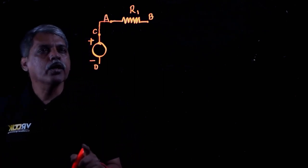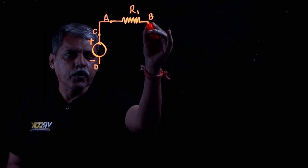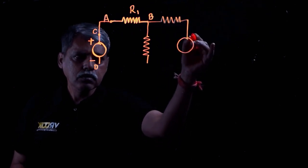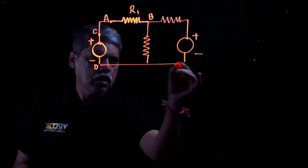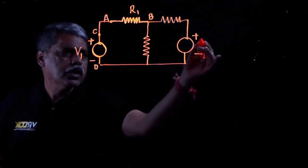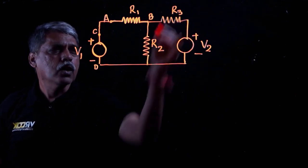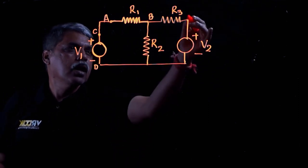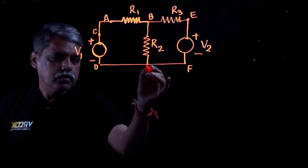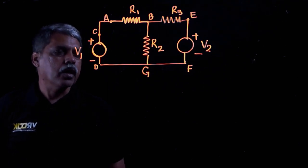In a DC network we can have a good number of resistors connected together to form the network. For example, completing this network by adding a few more resistors and one more voltage source: we call the voltage sources V1 and V2, and the resistors R2 and R3. Each element is a two-terminal element — BE is a resistor, EF is a voltage source, BG is another resistor. Three resistors and two voltage sources are forming this electrical network.